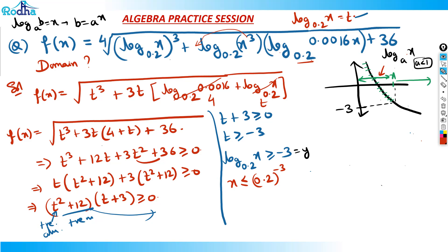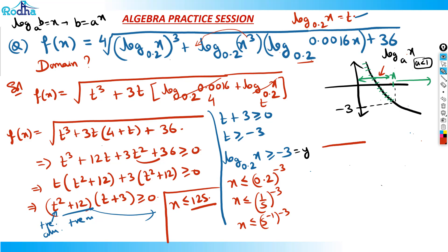The value of x is now restricted to this region. So x is less than or equal to 0.2 raised to minus 3. That is 1/5 raised to minus 3, which equals 5 cubed, so x is less than or equal to 125. Also, since x is the argument of a log, x must always be positive — x greater than 0. So x belongs to the range 0 to 125, with 125 included and 0 not included.